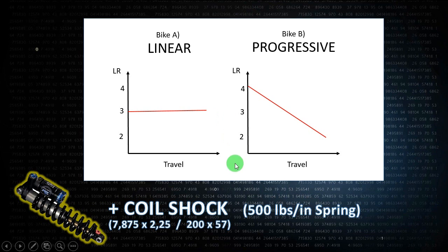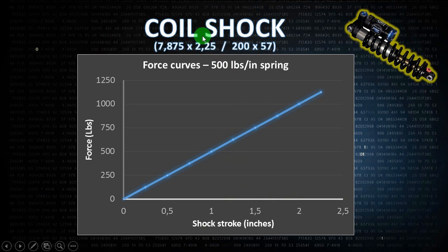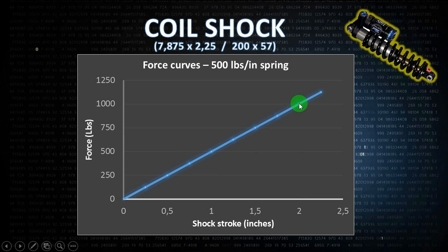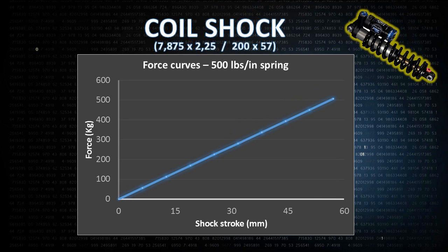We will add a coil shock to these bikes for simplicity. We have a coil shock with a 500 pounds-per-inch spring rate. That means that for each one inch of stroke you compress the shock, you have to add 500 pounds of force. To compress two inches, you need 1000 pounds of force.